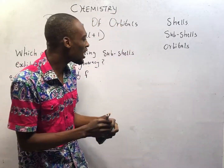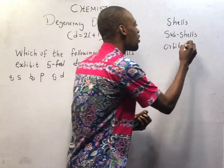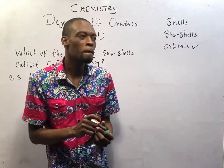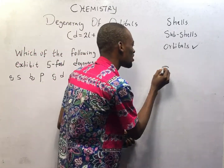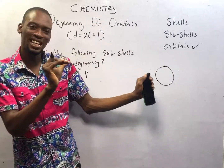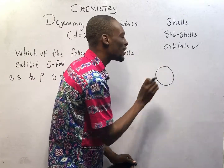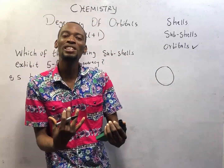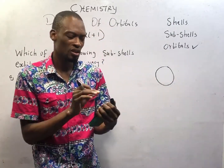This model of the atom introduced the concept of orbitals. According to the wave mechanics model, the position of an electron cannot be determined. You cannot determine the exact position of an electron. You cannot look at an atom or an element and say that this electron must be here. There is always uncertainty in finding the position of an electron.